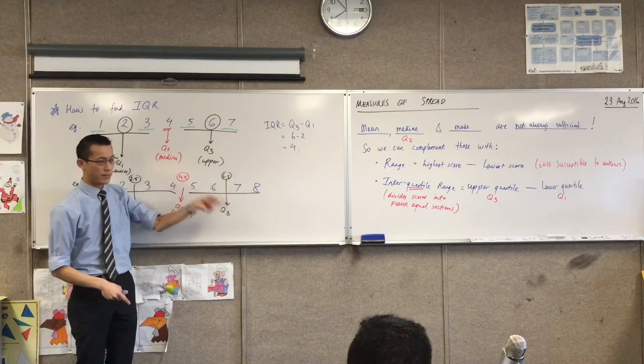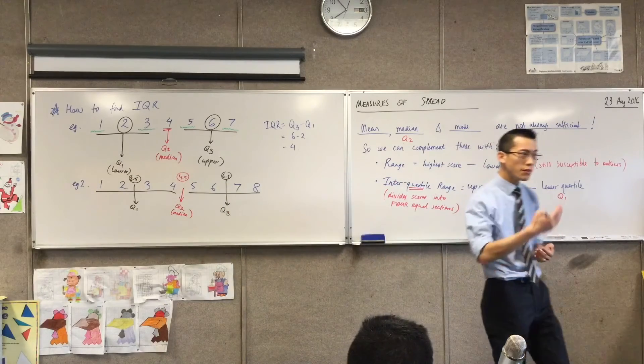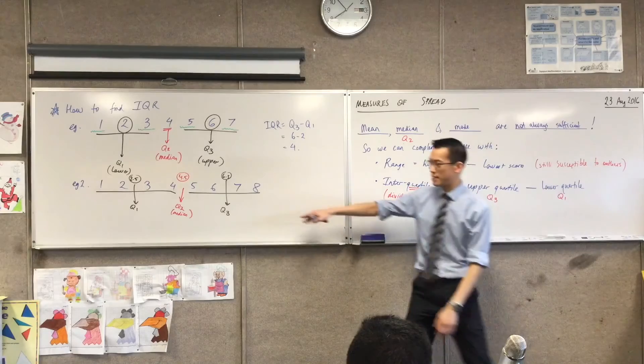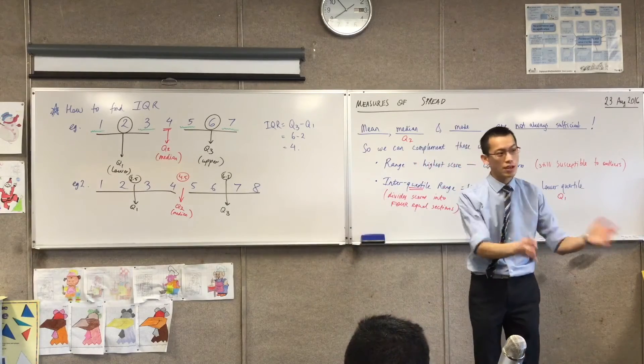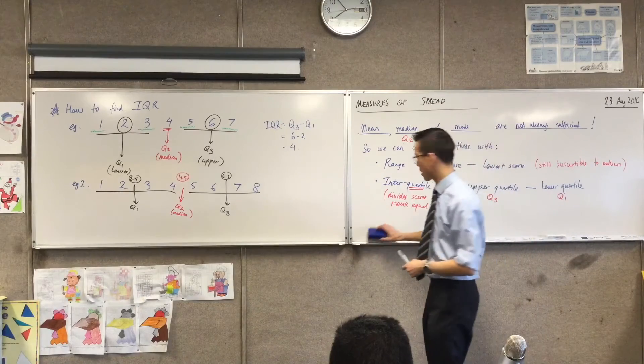Now, we did it for seven scores. We did it for eight scores. I'd like you, without me holding your hand, could you do it for nine scores and for ten scores as well? Just do that as example three and example four. I want you to see if you can do it on your own, and then we'll share our results in a minute. Okay, have a go.